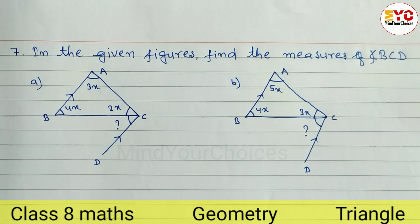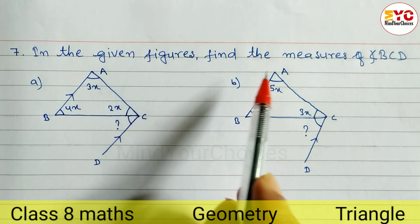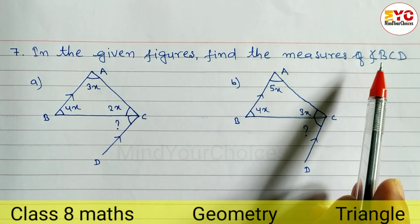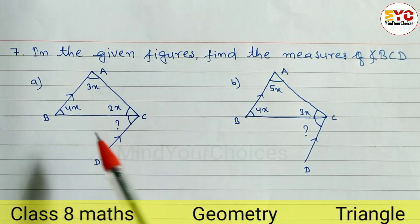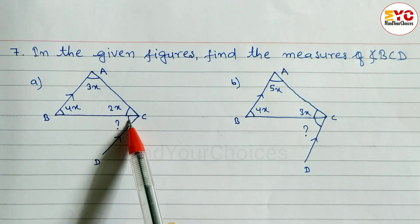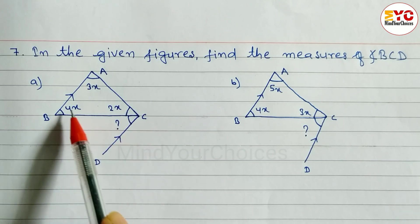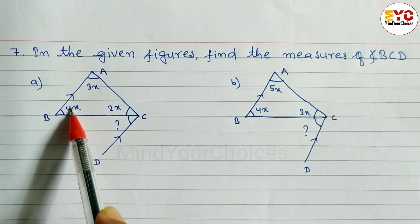Hello everyone, we are here to learn some geometric problems. You can see we have three questions today. In the given figure, find the measure of angle BCD — we have to find out this angle. You can see this angle and this angle are equal.